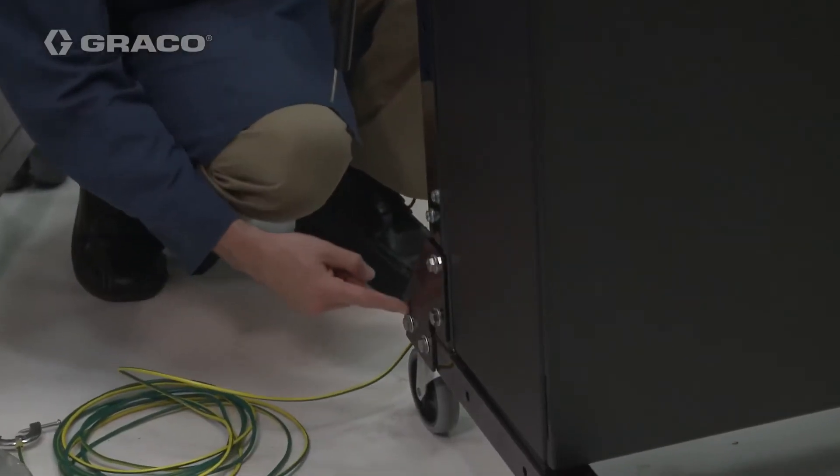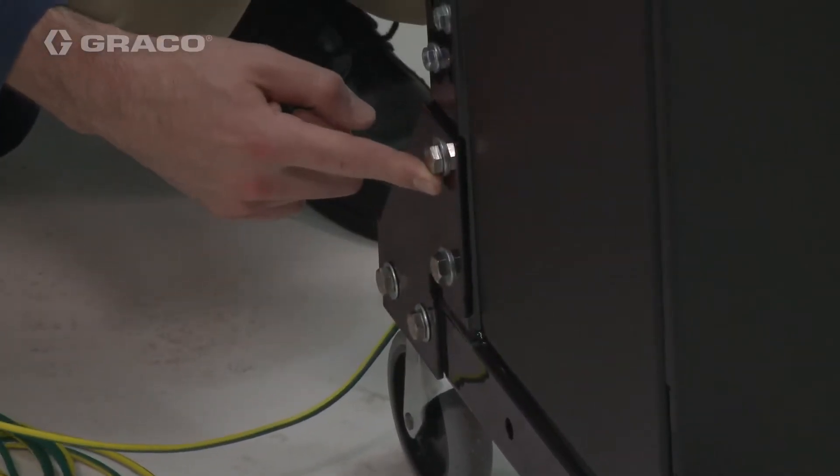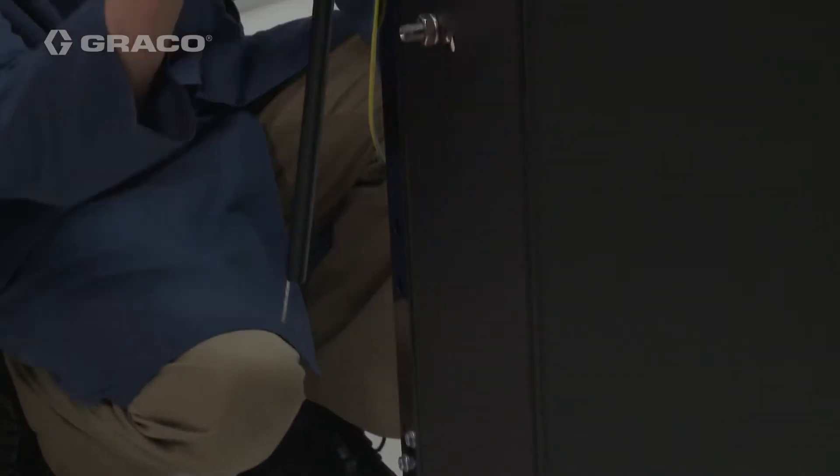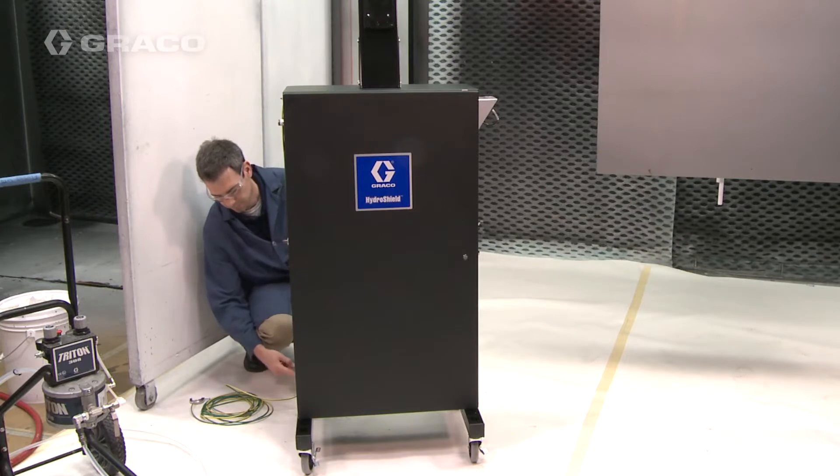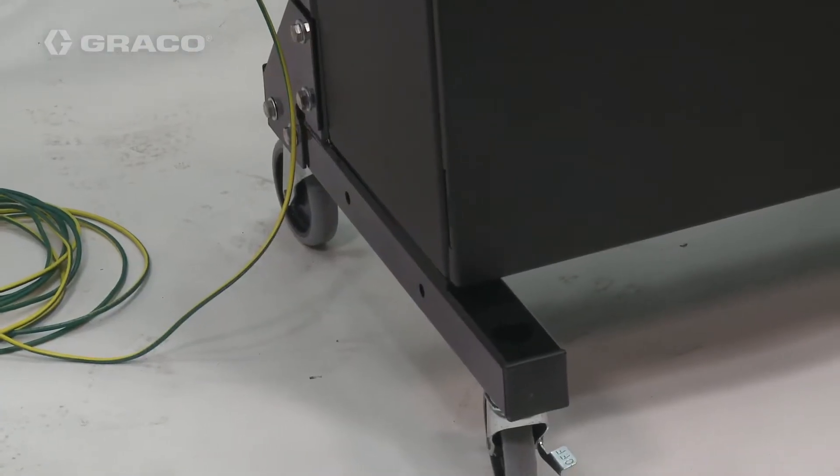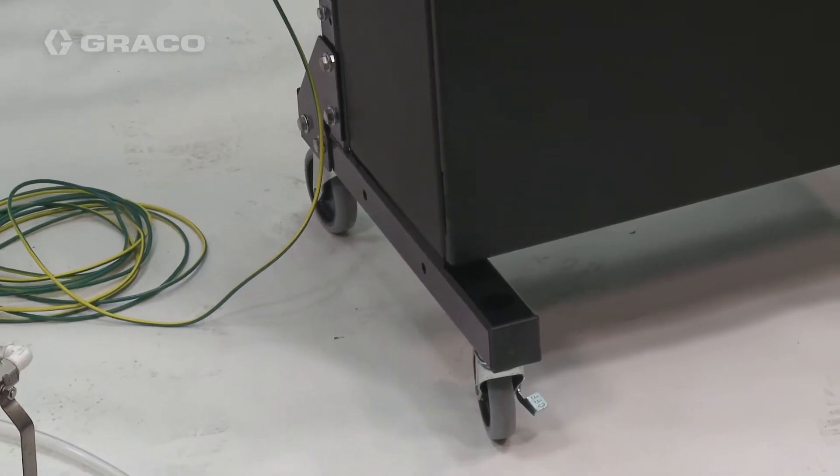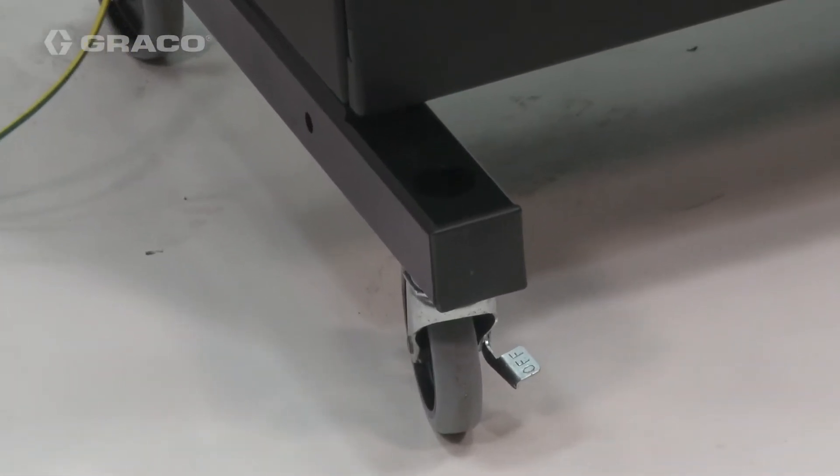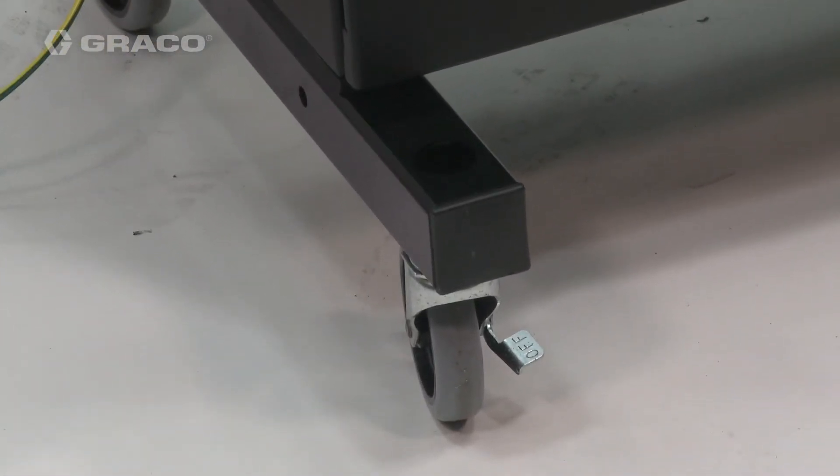Another option is to mount the isolation cabinet to the wall or to the floor. To wall mount, use L-brackets and mounting hardware with the mounting holes provided on the side of the frame. Remove the feet from the frame and secure the system to the wall. To mount on the floor, use the bolt holes where the wheels are now installed.